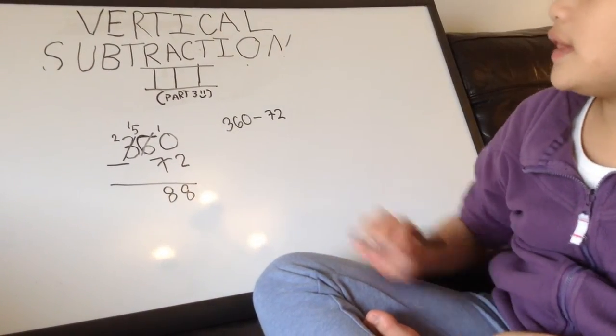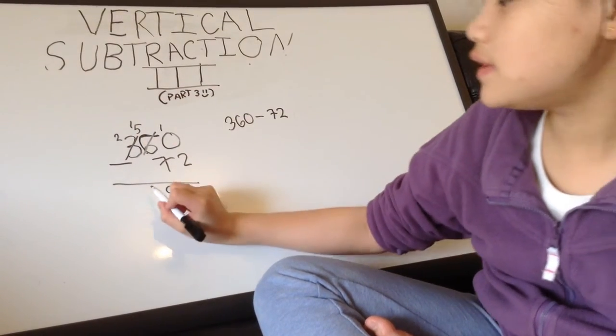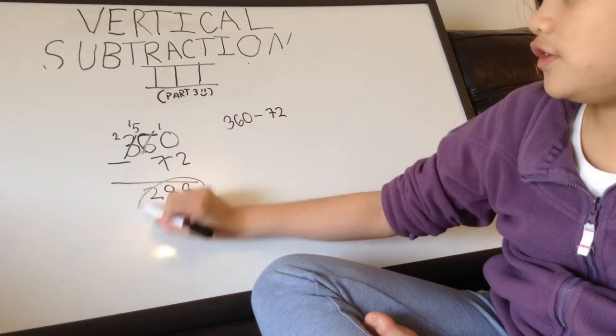So, we write 8 there. 2 take away nothing is 2, which becomes 288.